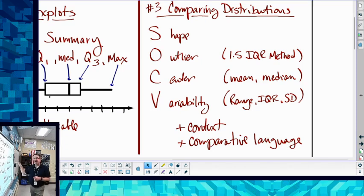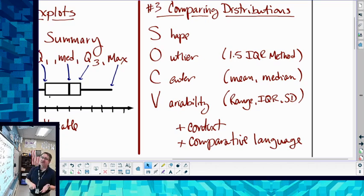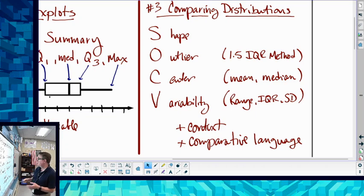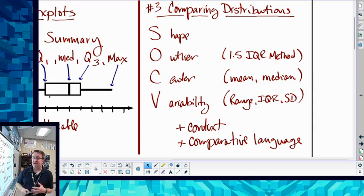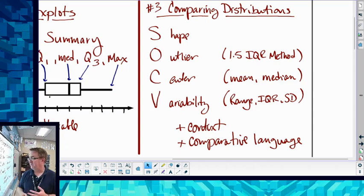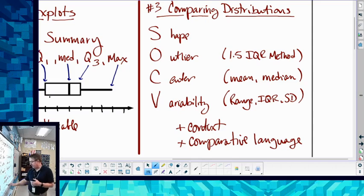Outlier we now have the 1.5 outlier method, so that's how we're going to determine if we have outliers. Center we can either use the mean if it's symmetric or median if it's skewed. We have variability: we can use the range, we can use the IQR if we have a lot of outliers, we can also use the standard deviation that we talked about yesterday. And lastly, please do not forget context.